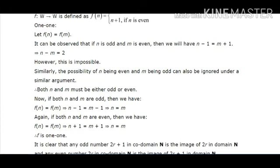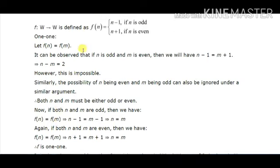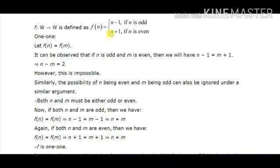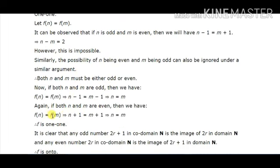Now if both n and m are odd, then f(n) = f(m) gives n - 1 = m - 1, so n = m. And if both are even, then f(n) = f(m) gives n + 1 = m + 1, so again n = m. In all cases, f(n) = f(m) implies n = m. So f is a one-one function.